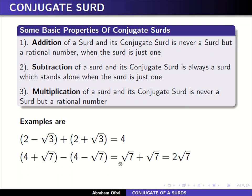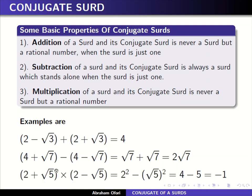For the subtraction of a surd and its conjugate: I have four plus square root of seven and four minus square root of seven. If I subtract them, four minus four gives zero, then square root of seven minus negative square root of seven gives plus square root of seven, and that gives two square root of seven. So the result is still a surd, which stands alone.